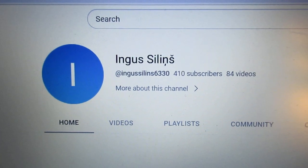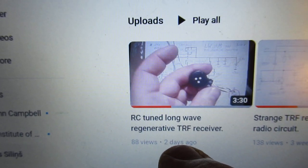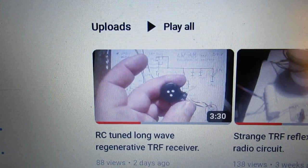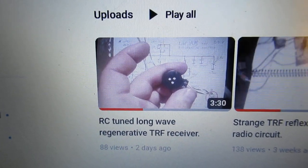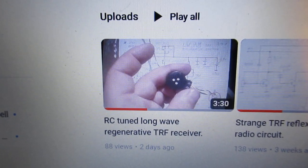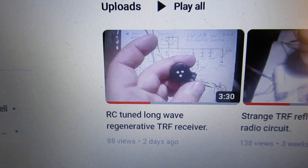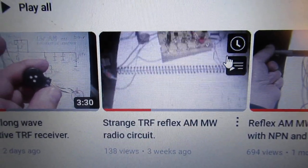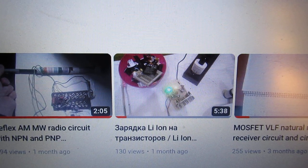And here you see some of his experiments. For instance, this long wave regenerative TRF receiver is in my opinion a brilliant example of how you can make a radio circuit for these low frequencies, long wave. And he has used a Wien bridge to tune in to certain long wave radio transmitters.